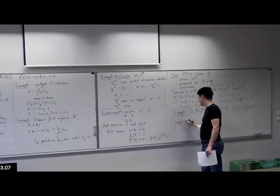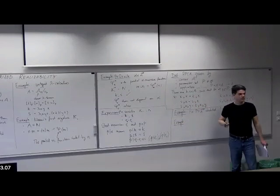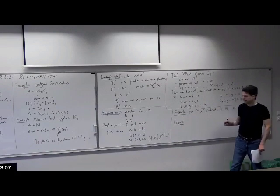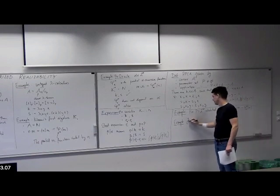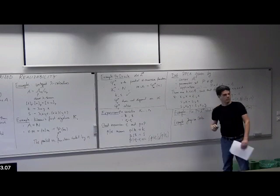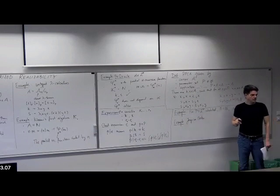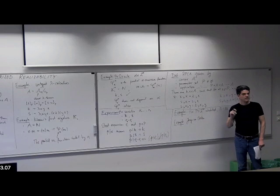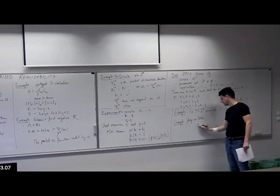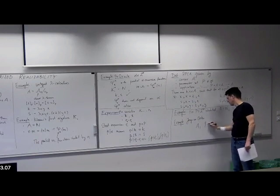Another example which convinces me that this is a good definition is Oosten's construction. In his book, he has a construction which takes any partial combinatory algebra A and any partial map from A to A, and constructs a new partial combinatory algebra where this partial map is adjoined as an oracle — it becomes representable in the new PCA. This is a free construction: any other algebra morphism that allows interpreting ψ factors through this one.